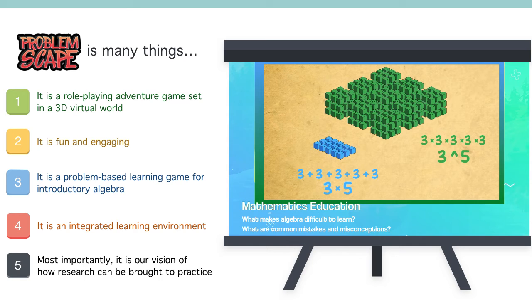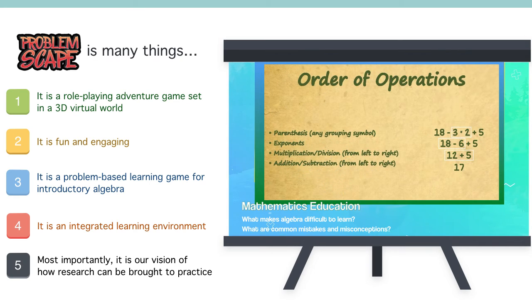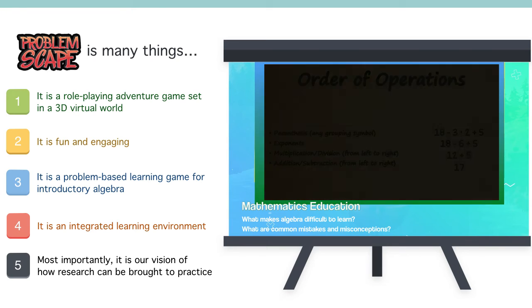Did you see how fast the exponent grew and why? One mistake people often make is that they think that addition has to be done before subtraction, and that multiplication has to be done before division. This is not correct. When an expression has both an addition and subtraction, they have to be evaluated in whatever order they come in from left to right.